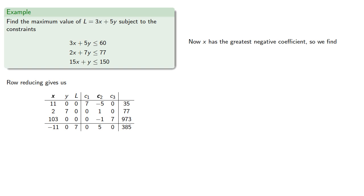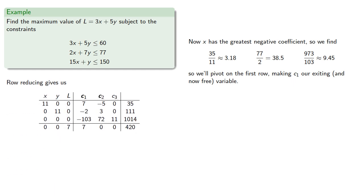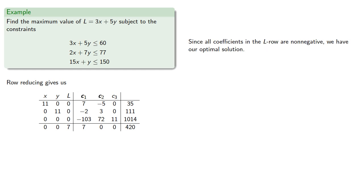Now X has the greatest negative coefficient, so we find. So we'll pivot on the first row, making C1 our exiting and now free variable. Row reducing gives us. Since all coefficients in the L row are non-negative, we have our optimal solution.